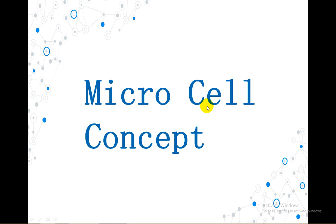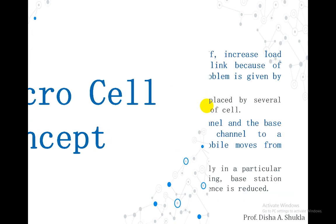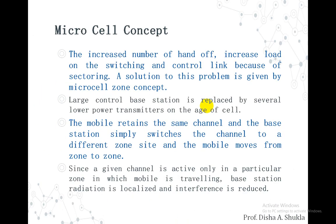What do you mean by microcell? We are already discussing about how to improve the coverage and the capacity of a particular wireless network, and in that we have seen two different methods: cell splitting and cell sectoring. The microcell concept is again a part of it — it is used to improve the capacity and coverage of a particular wireless communication network.